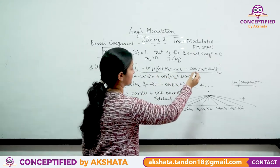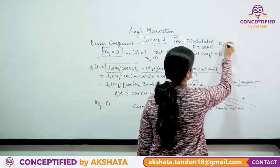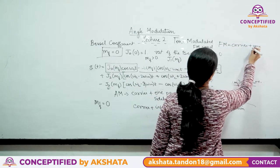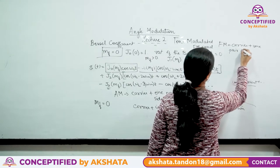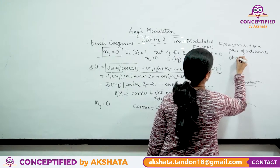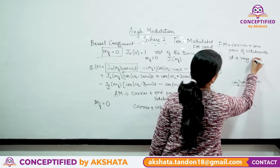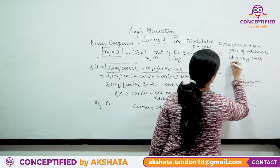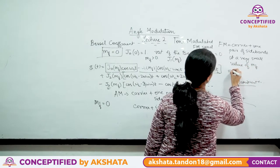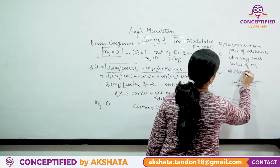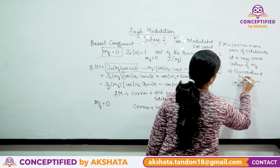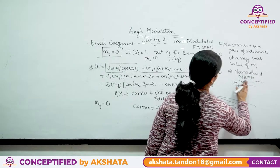To summarize: FM consisting of a carrier and one pair of sidebands at a very small value of mf is called Narrow Band FM, abbreviated as NBFM.